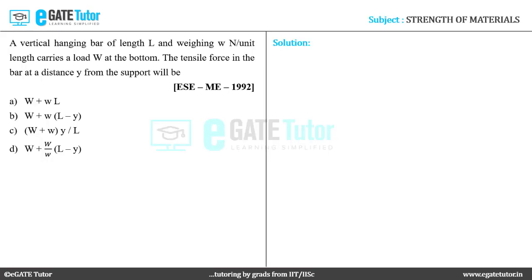This question is from Engineering Services Examination 1992 Mechanical Engineering. A vertical hanging bar of length L and weight W Newton per unit length carries a load W at the bottom. The tensile force in the bar at a distance Y from the support will be.